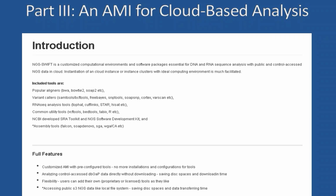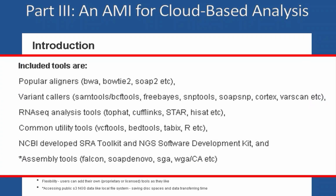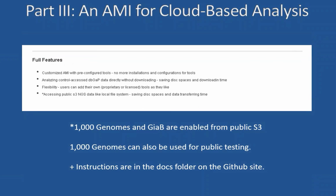Configuring this AMI would be a fairly straightforward way to then be able to use BWA. Here are some of the included tools in this particular AMI — that makes it very easy to do this type of work. Additionally, Amazon has decided to include 1000 Genomes as well as Genome in a Bottle, which many people use to filter variants, in their public S3 buckets, and those are all ready to go on this AMI. We also have in dbGaP a 1000 Genomes instance which can be used for testing. Instructions are in the docs folder on the GitHub site.